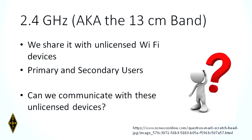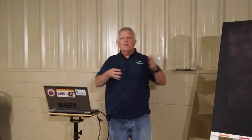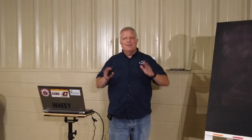The 2.4 GHz area is known as the 13-centimeter band — that's a ham band. We share it with unlicensed devices. Can we communicate with conventional Wi-Fi routers from our ham routers? The answer is no, because it's a shared service. You can go ham to ham, but you can't go ham to somebody's house.